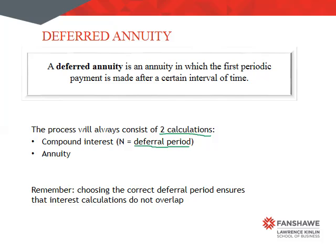We will also have the annuity calculation, which has to do with the periodic payment part. We have to be careful about how we choose this deferral period based on how we set up the annuity. We want to make sure there is no overlap of interest calculations — we don't want it calculating twice for the same period of time.